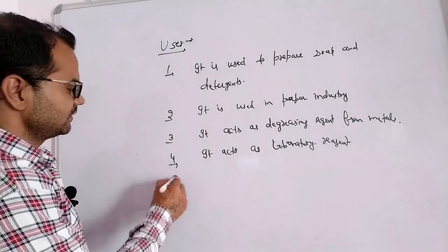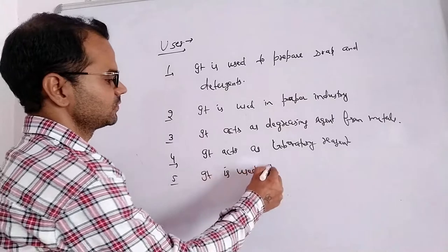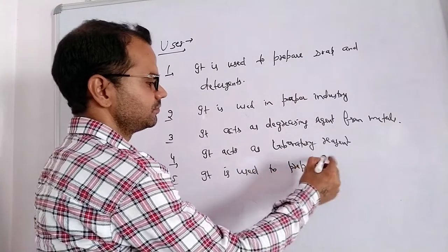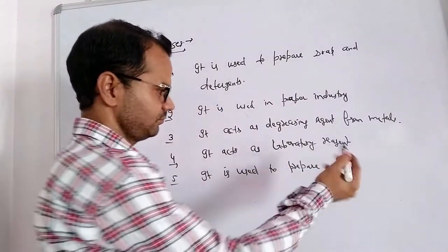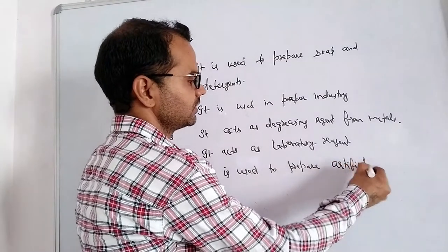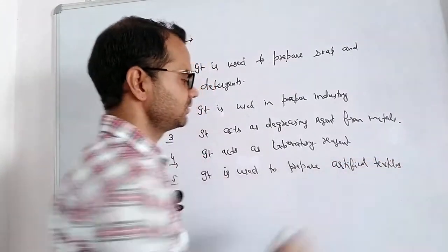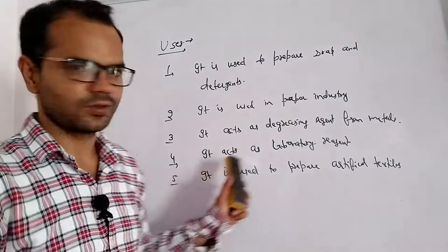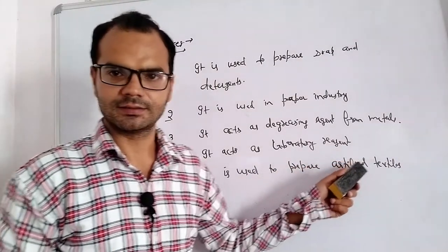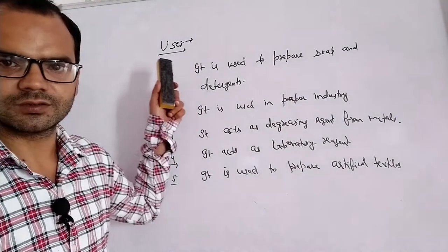Fifth, it is used to prepare artificial textiles. So this is the first salt — caustic soda — with its preparation, properties, and uses.